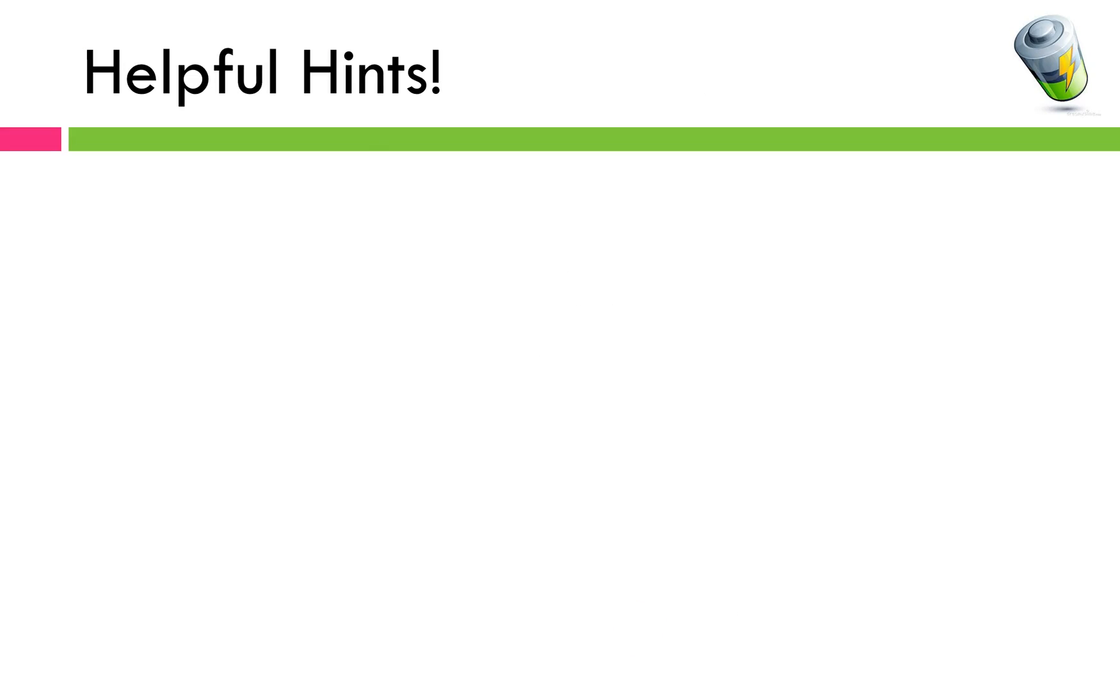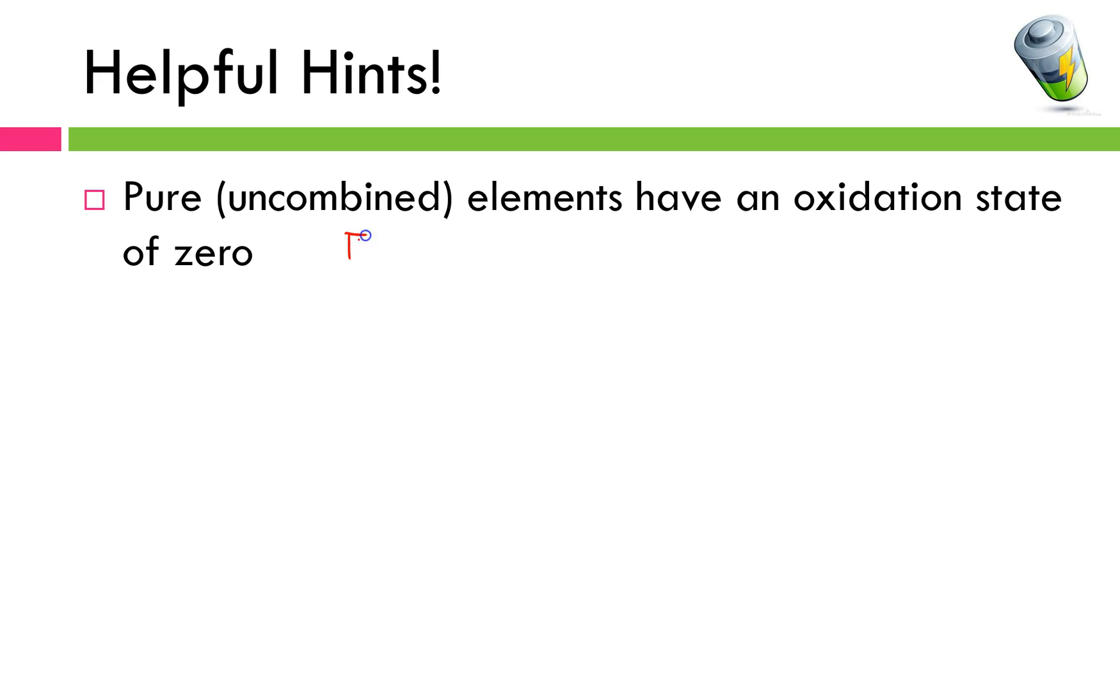Okay just a couple of helpful hints for you. First, pure or uncombined elements have oxidation states of zero. What we mean by pure or uncombined is we mean the elements as they exist in nature. So for example something like iron is just Fe all by itself, that's uncombined, would have an oxidation state of zero. Something like nitrogen, nitrogen does not exist as just a single element all by itself. It is N2. That has an oxidation state of zero. So anytime you have an element by itself or something like a diatomic or even a triatomic molecule, those have oxidation states of zero.